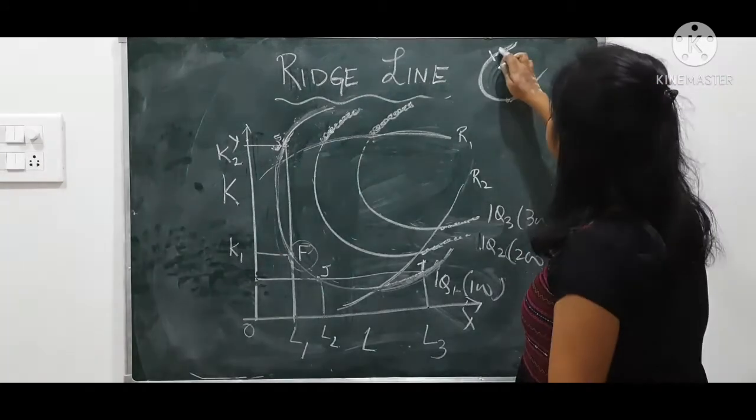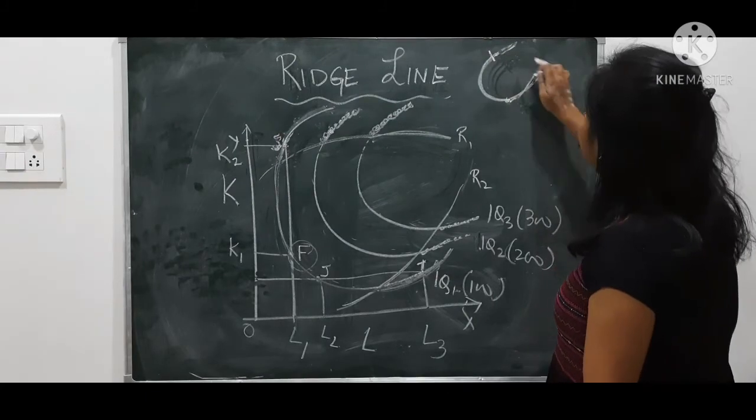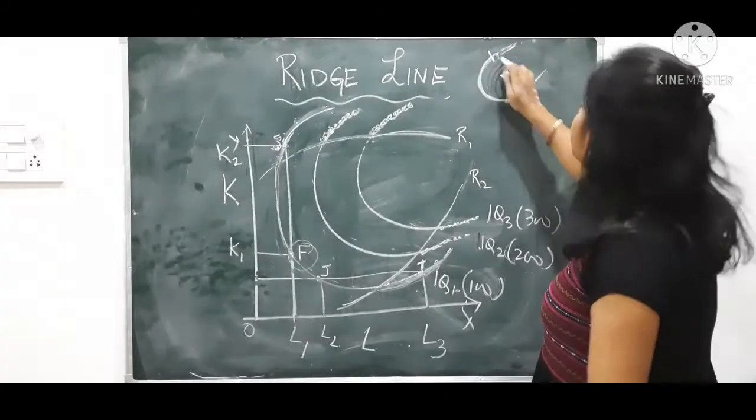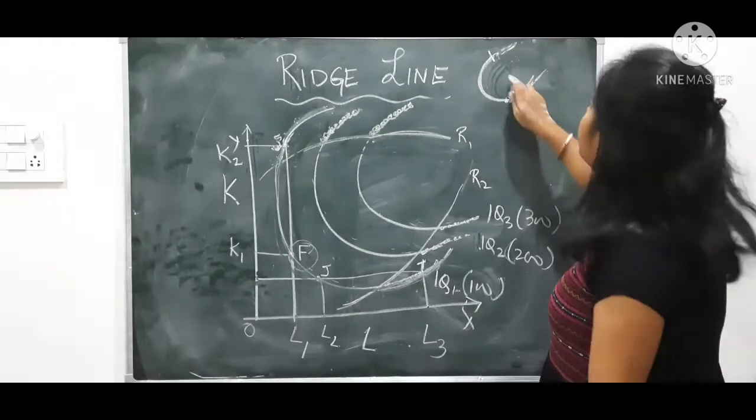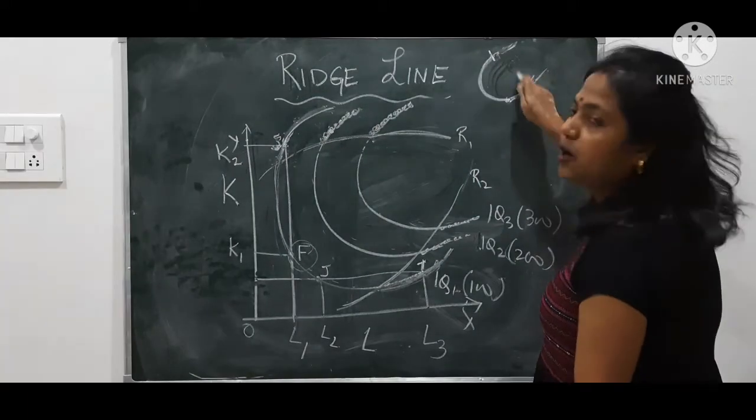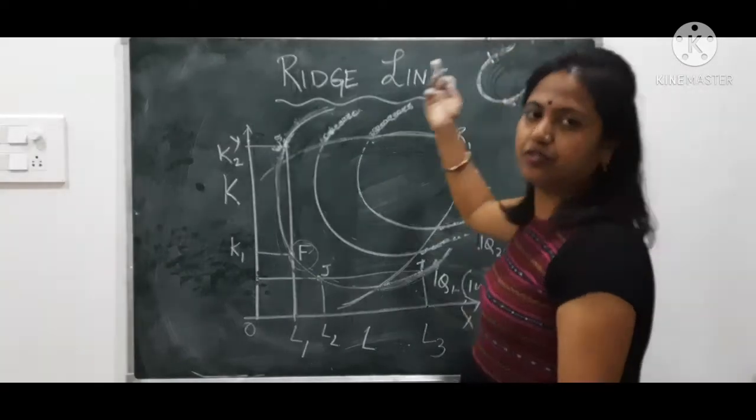Why? Because if you select any point after this, this will require more capital, this will require more labor, but this will produce the same output as any points in this curve.